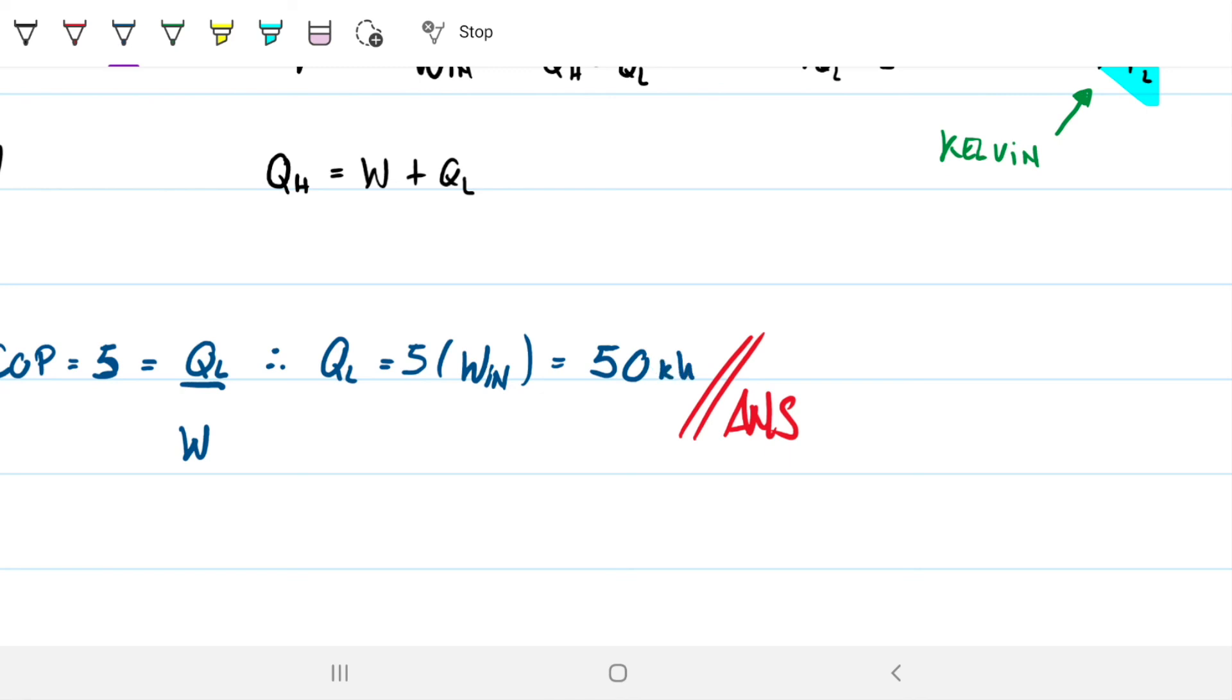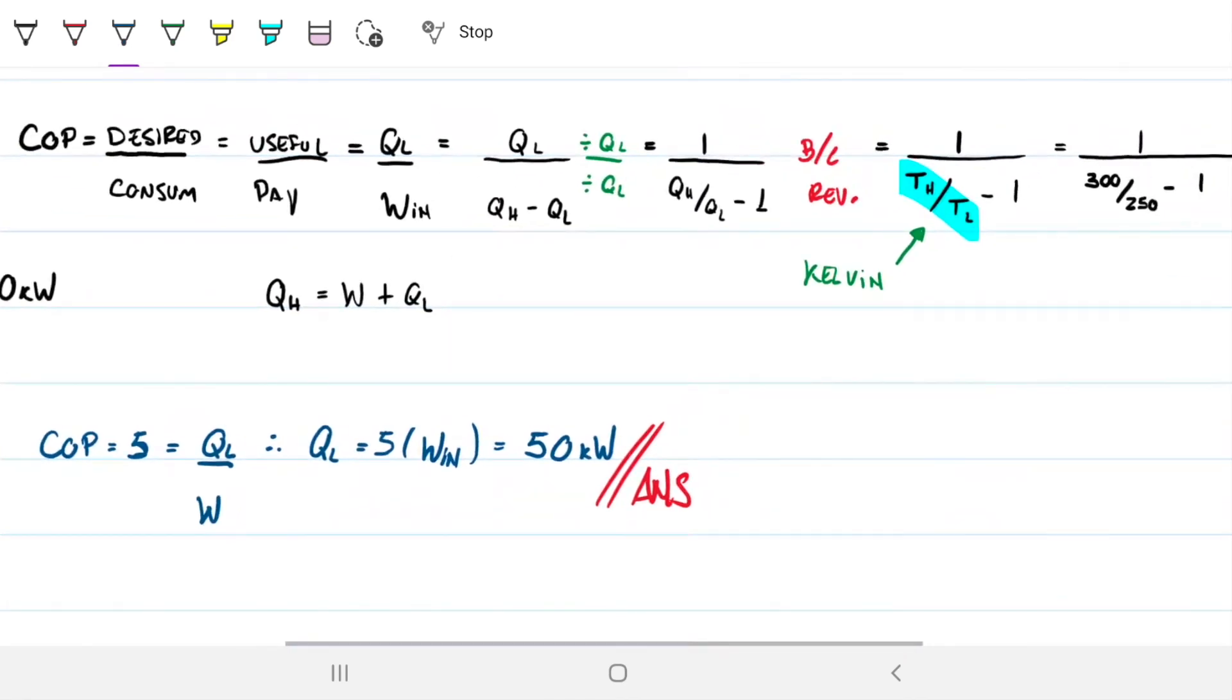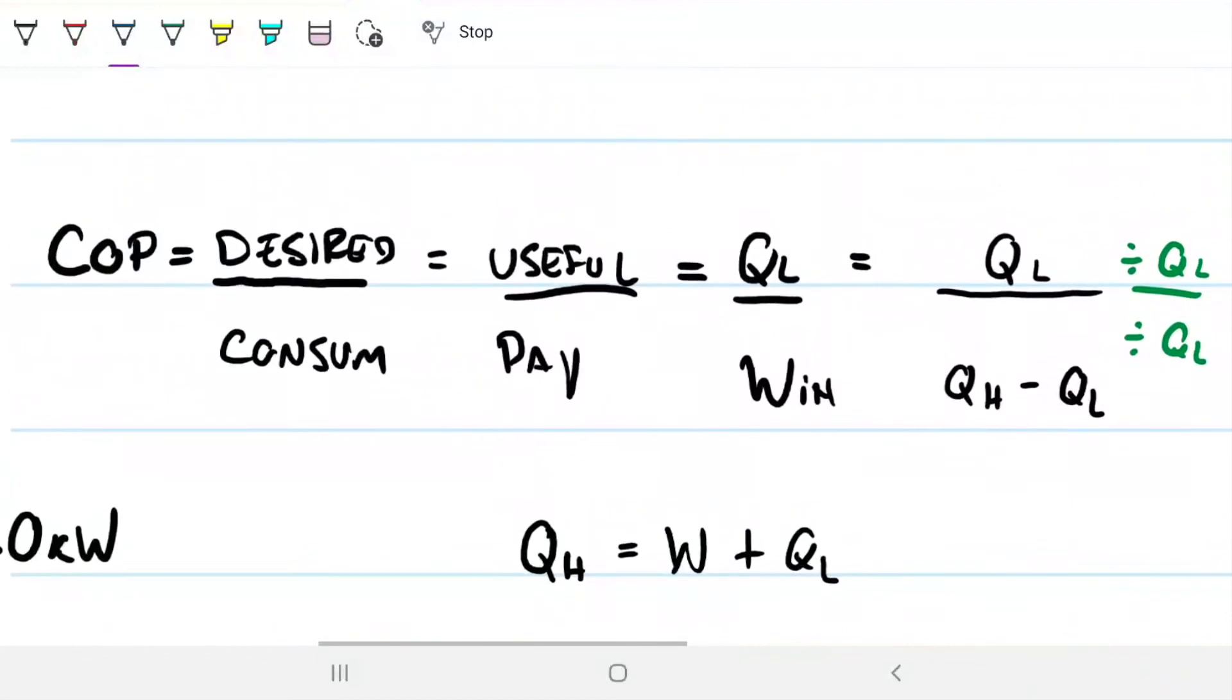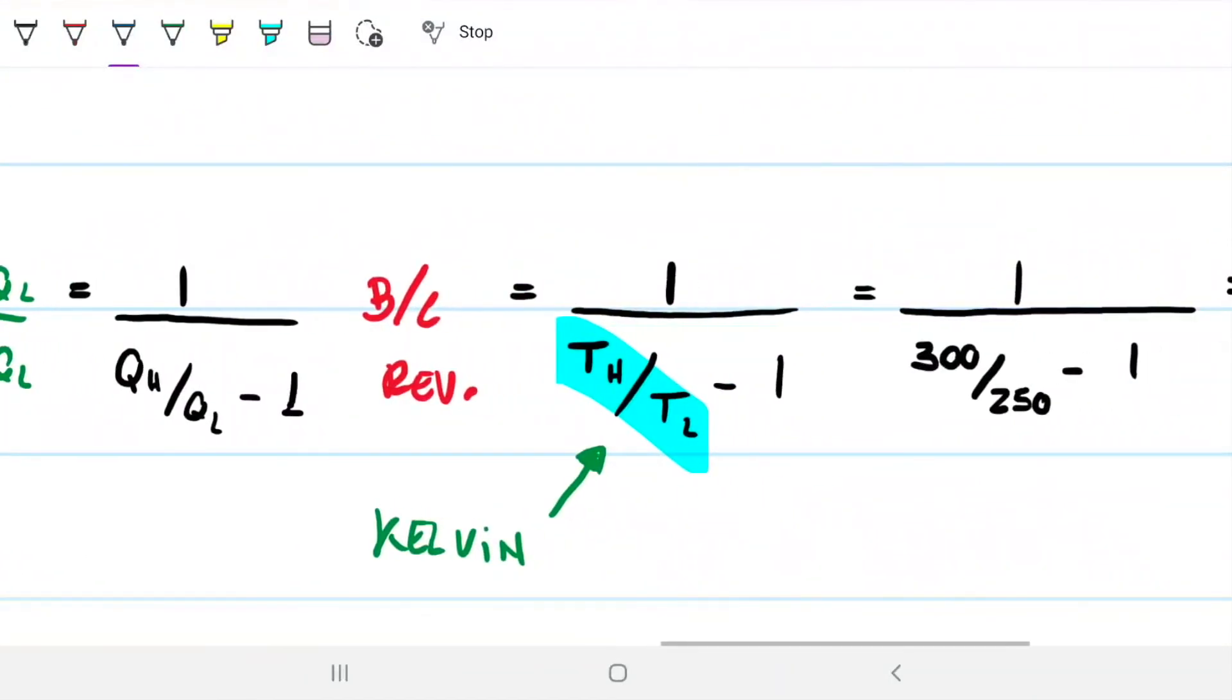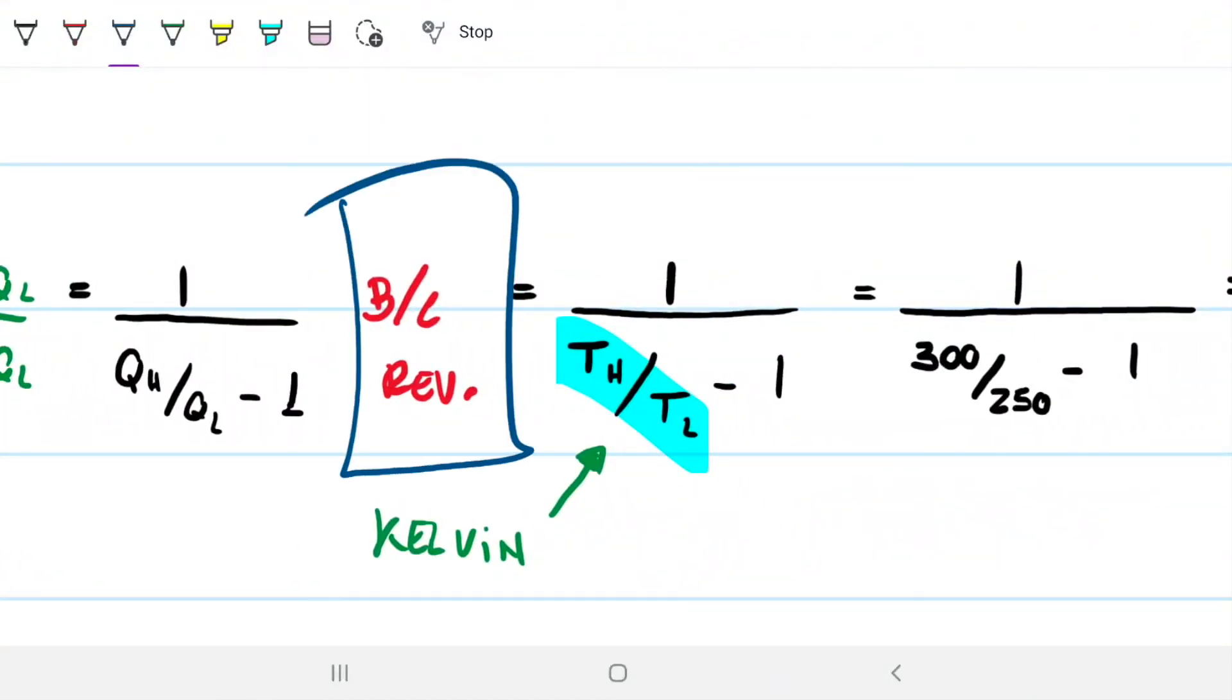So I would like you to do this problem on your own, hopefully from scratch without even looking up anything. The only thing you're going to have to remember is that this can only happen, this change from the heat into the temperatures can only happen if we have a reversible system. If we don't, then that's not true.